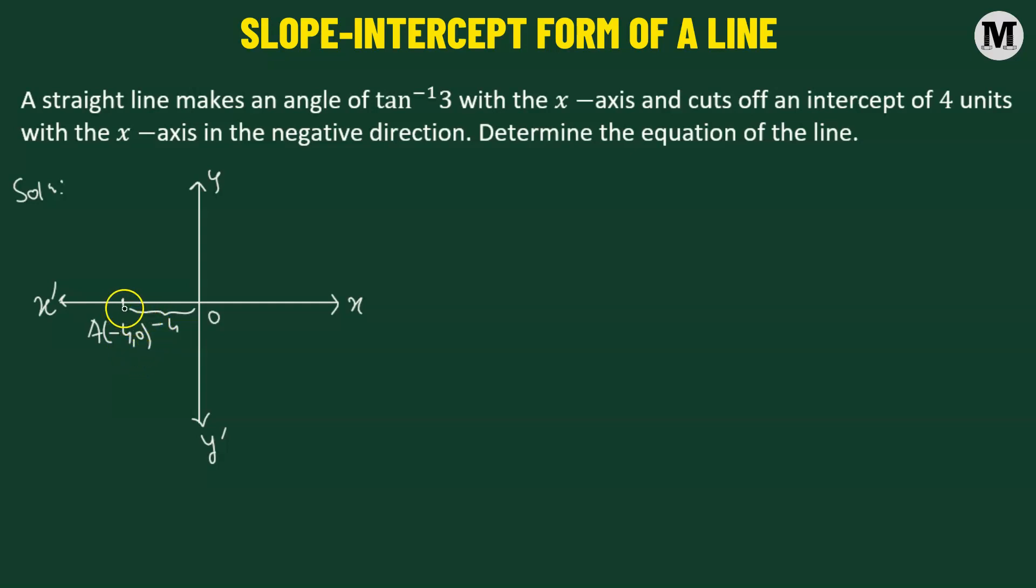Now the line is going to pass through the point A and is making an angle tangent inverse of 3. Now here, theta equals to tangent inverse of 3.